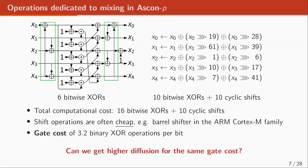If we look at the operations dedicated to mixing in the permutation, we see that in the S-box and substitution layer we have six bitwise XORs from the mixing step, and we have 10 bitwise XORs and 10 cyclic shifts in the linear layer. So in total, we have 16 bitwise XORs and 10 cyclic shifts. On some platforms the shift operations are free, so we omit them. This means the gate cost is 3.2 binary result operations per bit, and we want to know if we can get higher diffusion for the same gate cost.